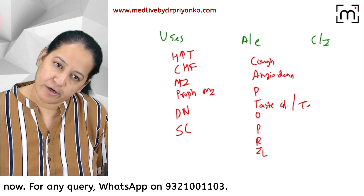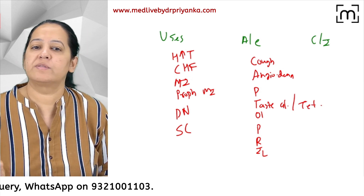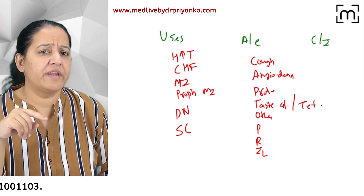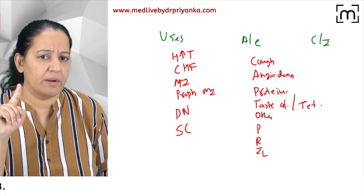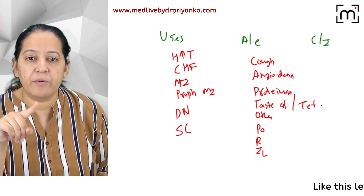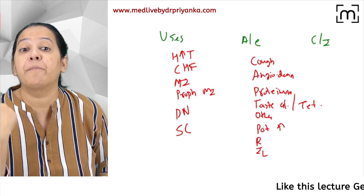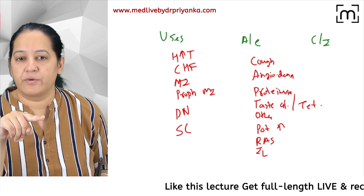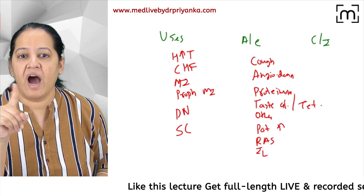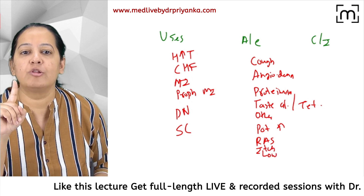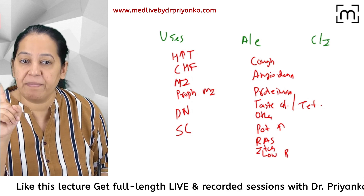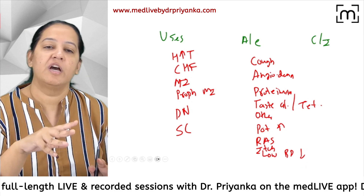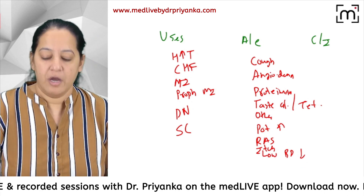Teratogenic effect can also be written here. O is for Others, P is for Proteinuria, another P is for Potassium — high potassium, that is hyperkalemia. R is for Renal Artery Stenosis, I is for Itch, and L is for Low BP — first-dose hypotension.